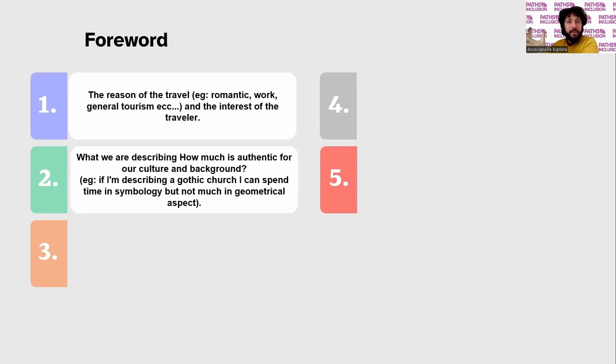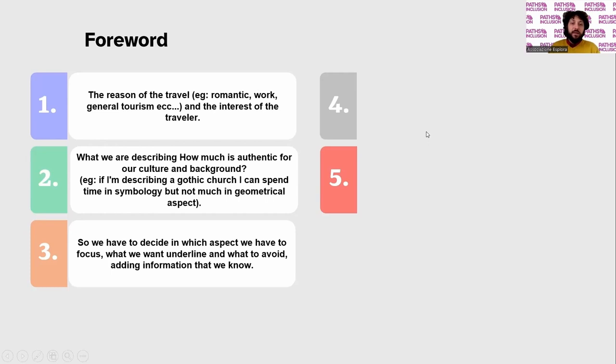If we are here to see another part of the church, we will not focus on the windows. But if my traveller is a youngster from Italy, where there are not many Gothic churches, probably I need to focus on the windows, because there is a particularity of Gothic architectural style that is important to share. This symbology and these particularities of Gothic style are important to underline because my traveller doesn't know them.